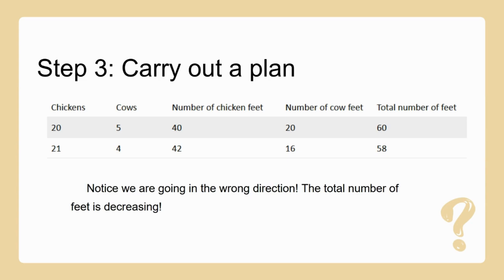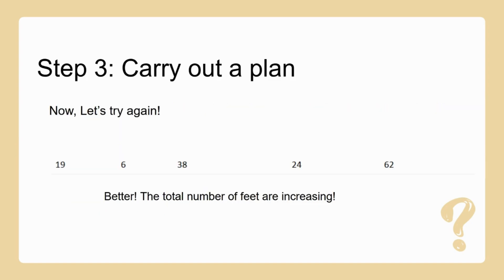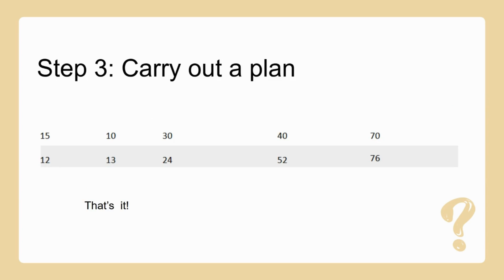Let's try another guess: 21 chickens and 5 cows gives us 58 feet total. Notice that we're going in the wrong direction — the total number of feet is decreasing. So let's try again: 19 chickens and 6 cows gives a total of 62 feet — that's better, the total is increasing. Now let's try 15 chickens and 10 cows — that gives us a total of 70 feet.